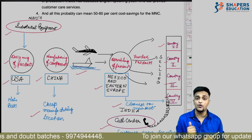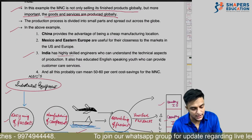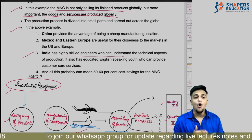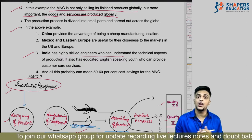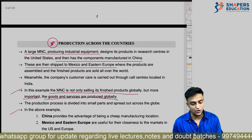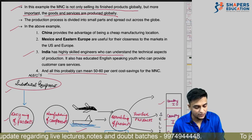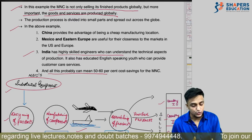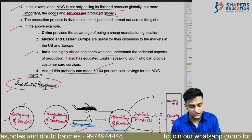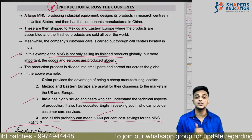India has highly skilled engineers and technical experts who handle customer care and calling purposes. This division of production results in cost savings — 50-60% cost savings for the MNC. This needs to be remembered well as logical/sequence-based questions can also be asked from this.